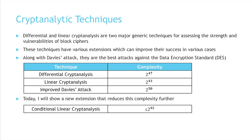Linear and differential cryptanalysis are two major generic techniques for assessing the strength of block ciphers. These techniques have various extensions which can improve the success in various cases. Along with Davis's attack, they form all the known shortcut attacks against the Data Encryption Standard.